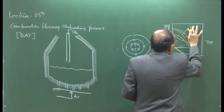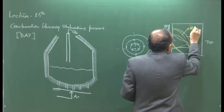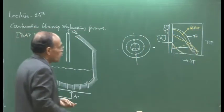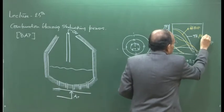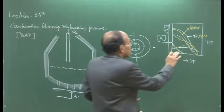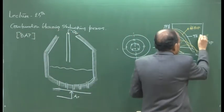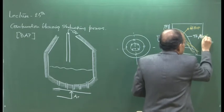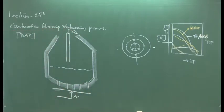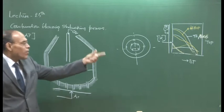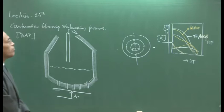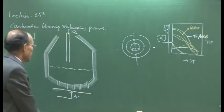BOS — Basic Oxygen Steelmaking — also written BOF, Basic Oxygen Furnace, or BOP, Basic Oxygen Steelmaking, which is the original configuration. Similarly here also you will see remarkably similar profiles of how elements get oxidized as a function of blowing time.